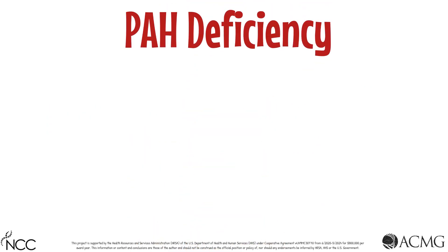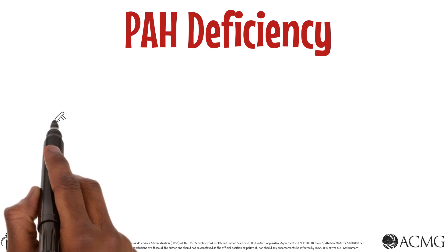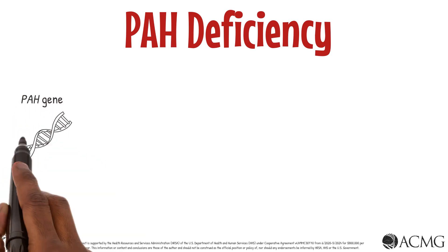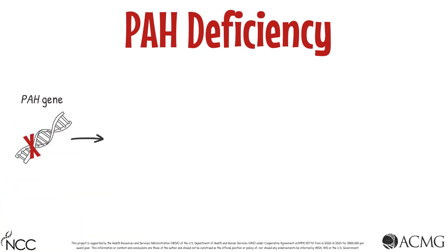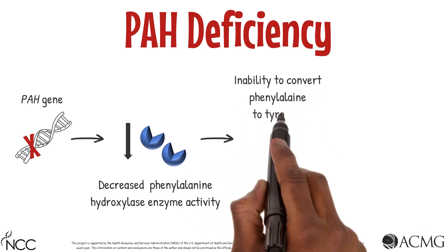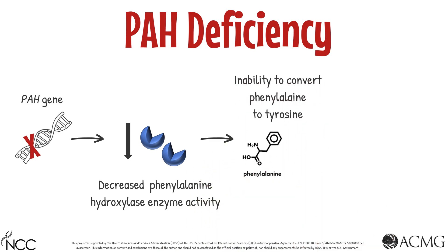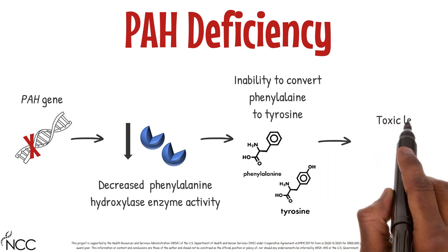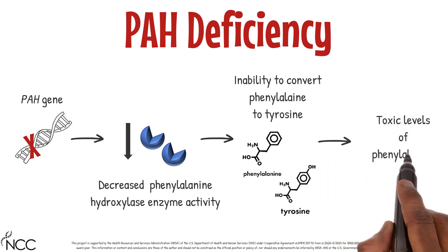The classic form of PAH deficiency, more commonly known as phenylketonuria or PKU, is an amino acid disorder caused by pathogenic variants found in the PAH gene, which leads to decreased phenylalanine hydroxylase enzyme activity. This reduced activity results in the inability of the body to convert the amino acid phenylalanine to tyrosine from dietary protein, resulting in toxic levels of phenylalanine in the body.